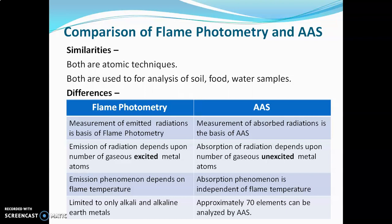Regarding differences: in flame photometry, measurement of emitted radiations is the basis, whereas measurement of absorbed radiations is the basis of AAS. Emission of radiation depends on the number of gaseous excited metal atoms, while absorption of radiation depends on the number of gaseous unexcited metal atoms. Emission phenomena depend on flame temperature, while absorption phenomena are independent of flame temperature. Flame photometry is limited to alkali and alkaline earth metals, while AAS enables analysis of approximately 70 or more elements.